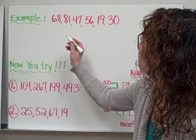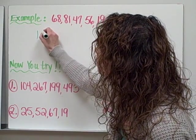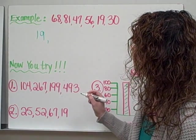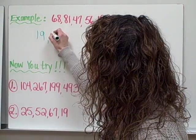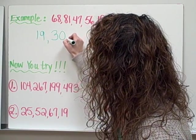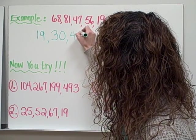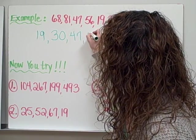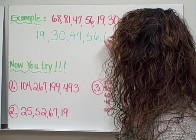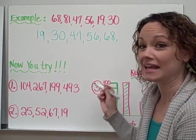We have 19 as our smallest number, and then 30 comes next, 47, 56, 68, and finally 81.